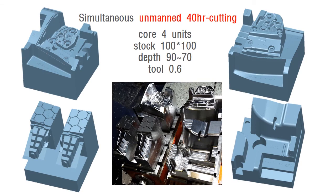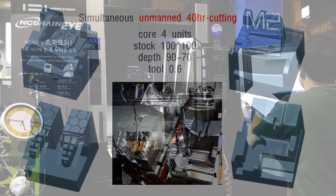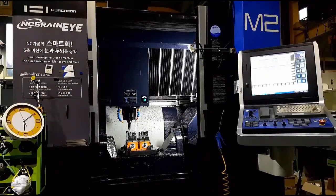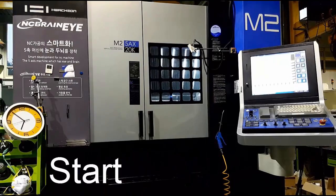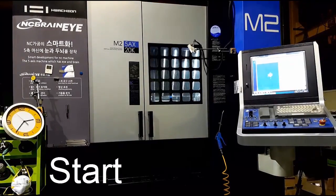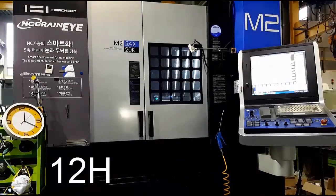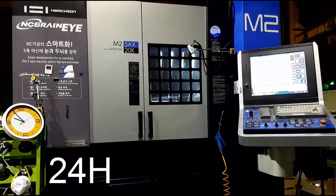To prove all these technology, let's see a video which shows unmanned operation with these four types of model. After roughing, the rest of the process is done with unmanned operation. For 40 hours, AI Cam can make best performance to machine various shapes.